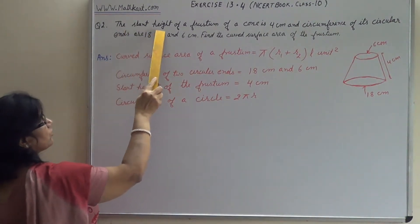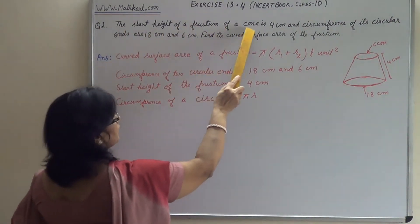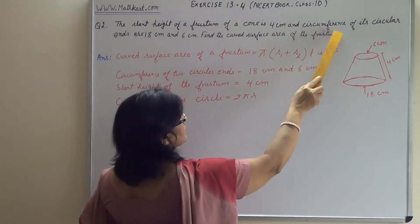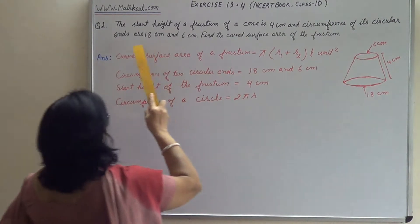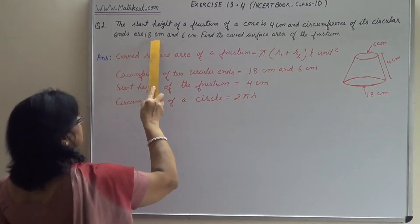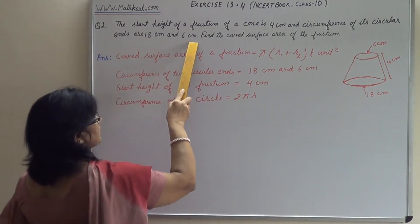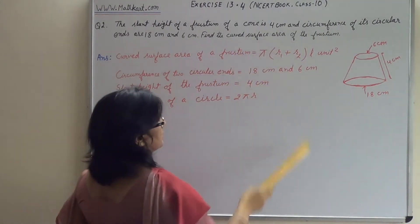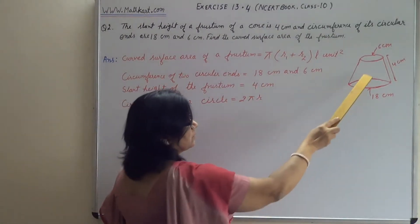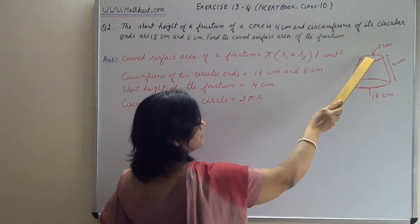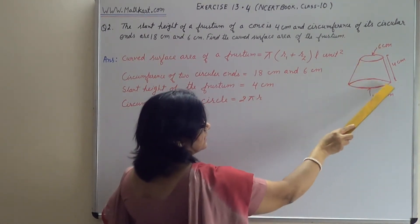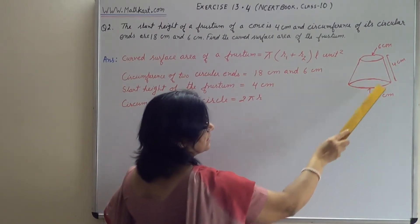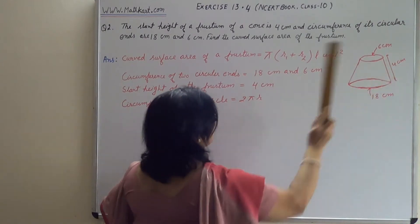The slant height of a frustum of a cone is 4 cm and the circumferences of its circular ends are 18 cm and 6 cm. The diagram shows the slant height is 4 cm. Find the curved surface area of the frustum.